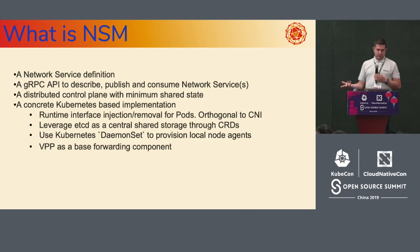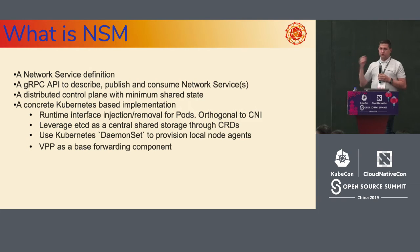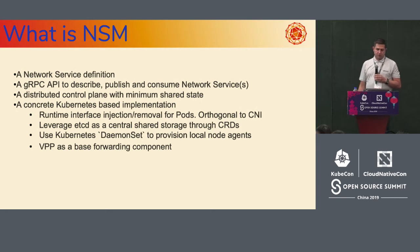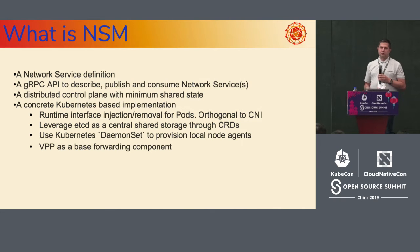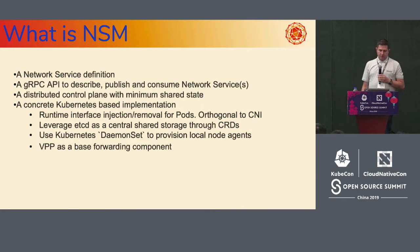NSM is three things: a network service definition, a gRPC API, and a distributed control plane with minimal shared state. The distributed control plane resembles Kubernetes' kubelet approach — local agents called Network Service Managers, run as DaemonSets, that are semi-separated and work on their own. The gRPC API provides an abstracted way to describe, publish, and consume network services. A network service is not a single entity — it's a composition of multiple functions and endpoints bound together into a single network service descriptor.